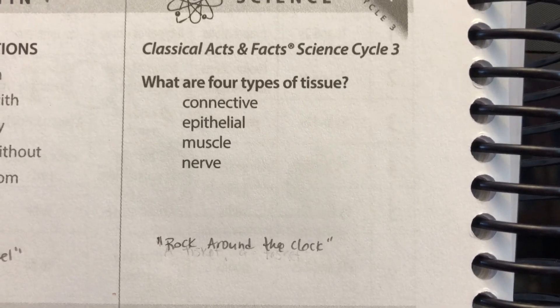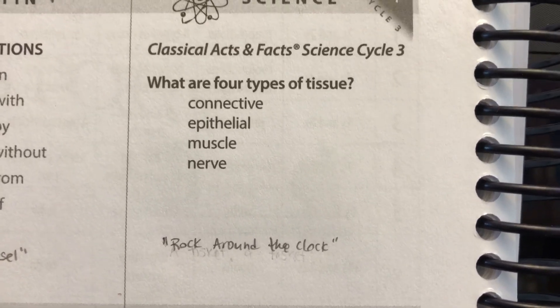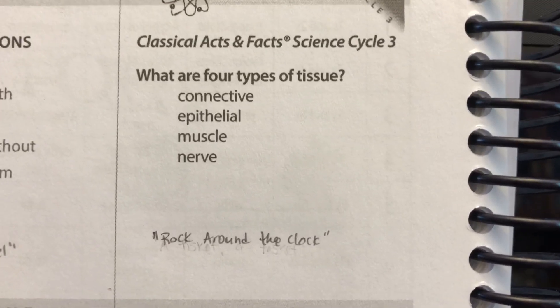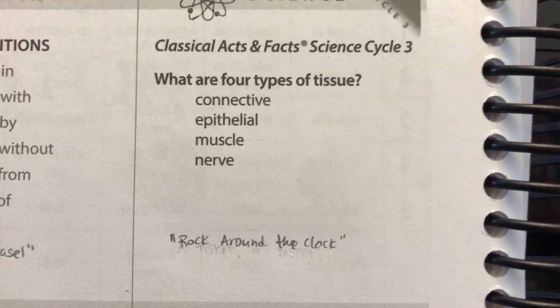What are four types of tissue? Four types of tissue are connective, epithelial, muscle, and nerve.